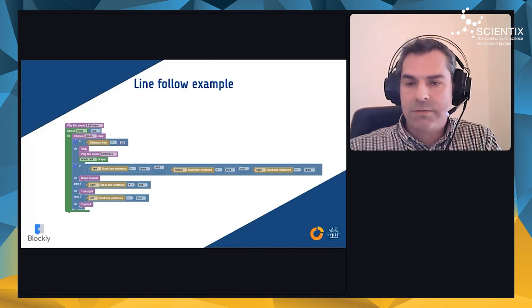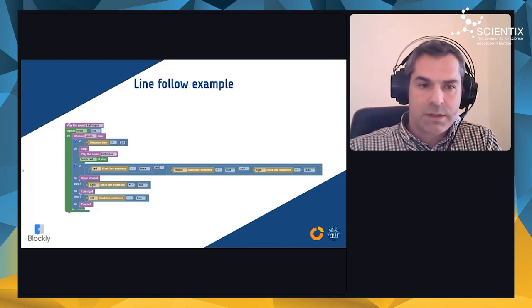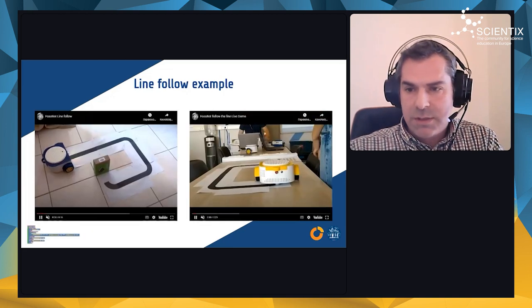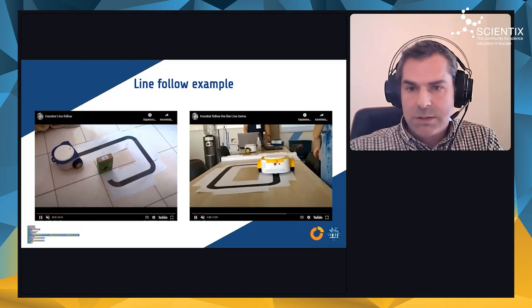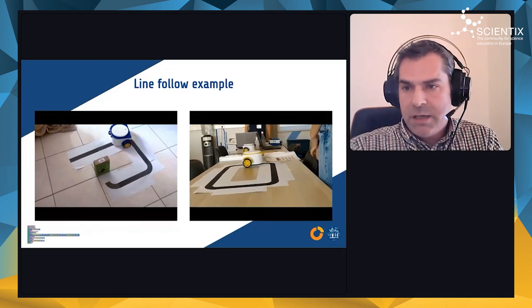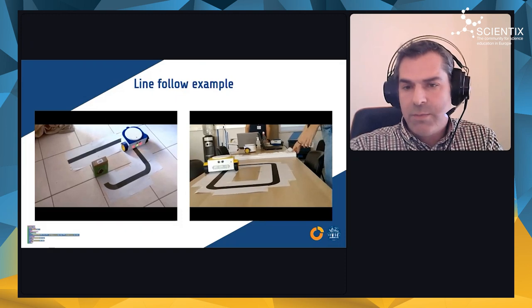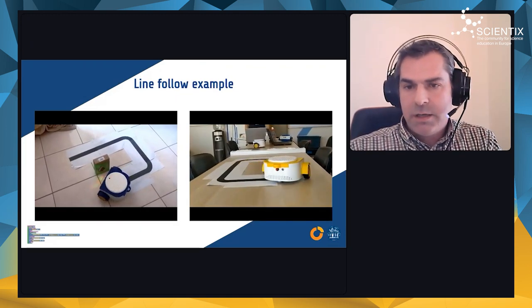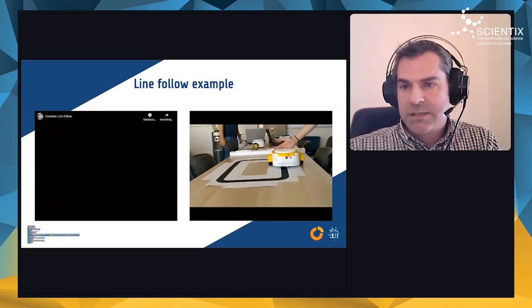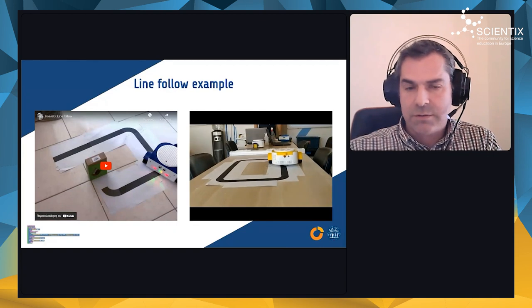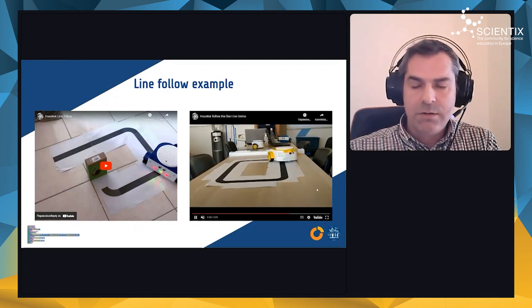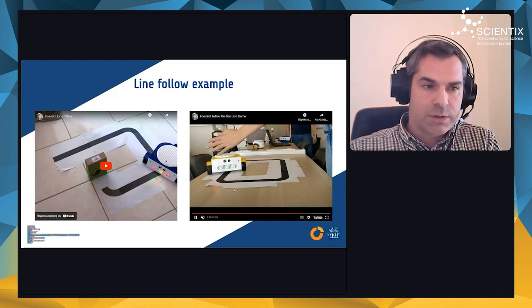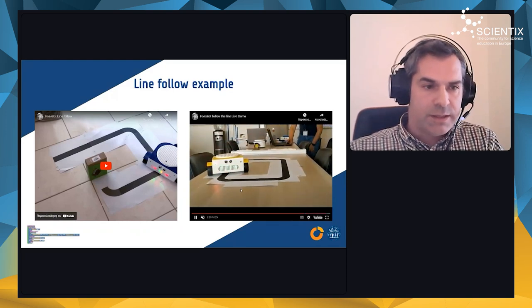It plays some sounds in the beginning, some sounds when an obstacle is found, and some sound when it stops. Here are the videos. You see two different line following examples using the previous code. It's a few blocks in Blockly. Here the robot stops because it finds an obstacle—the arm of the demonstrator which is considered as an obstacle. When the obstacle is removed, the FOSSBOT keeps doing the loop that it has.